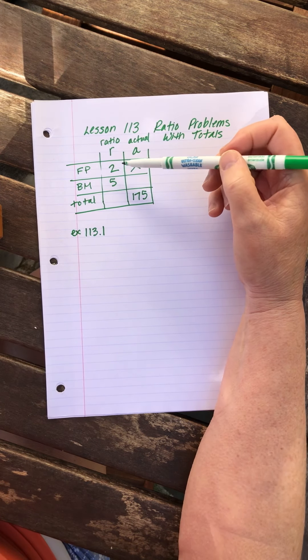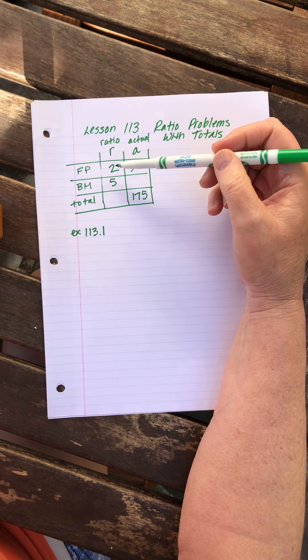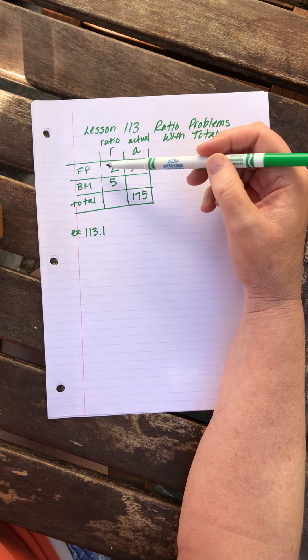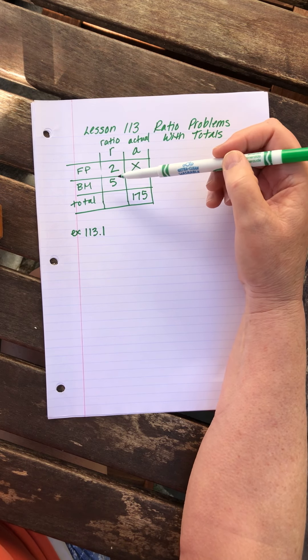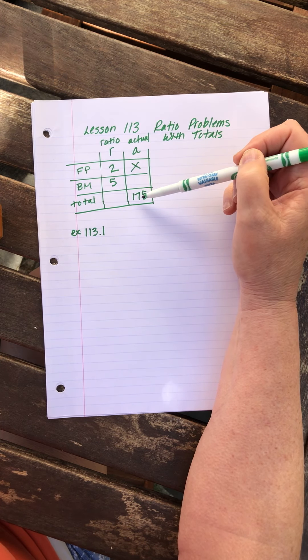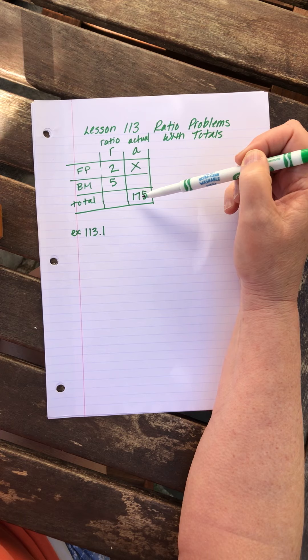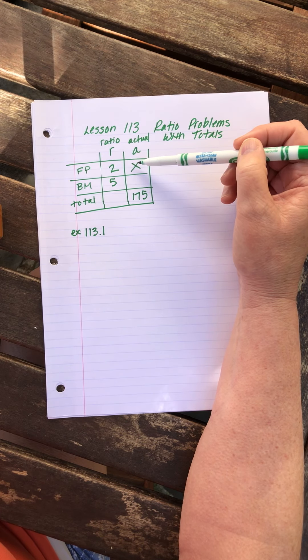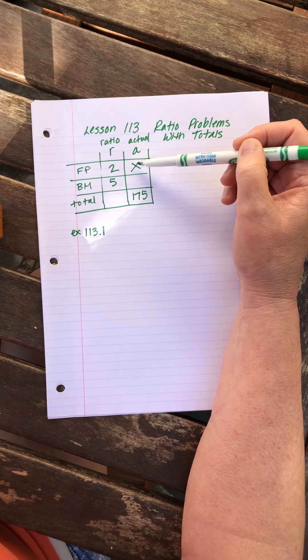I'm going to read it again and you can see how I filled it in. The ratio of football players to band members—I always write them in the order the problem says them—on the football field was 2 to 5. All together there were 175 football players and band members on the football field. How many football players were on the field?